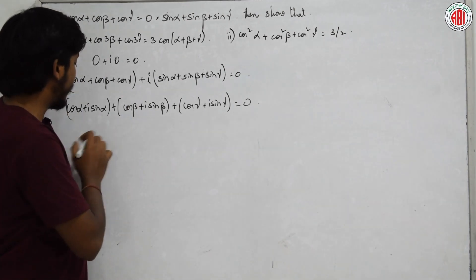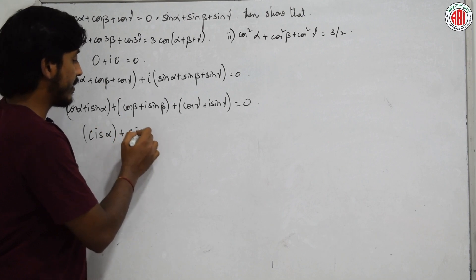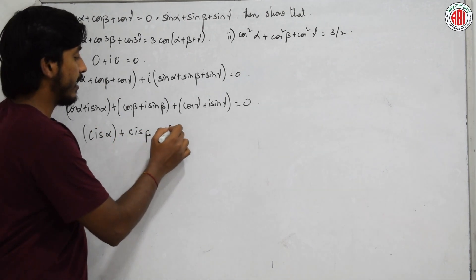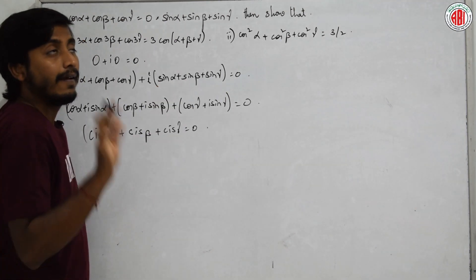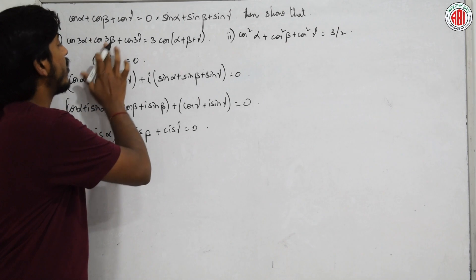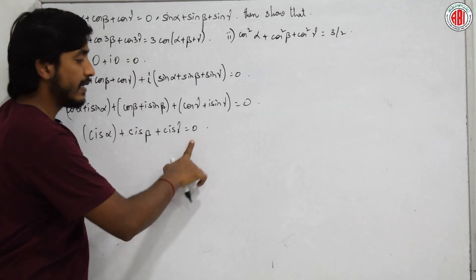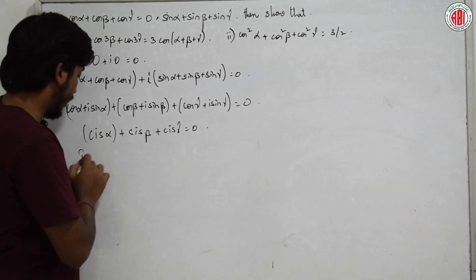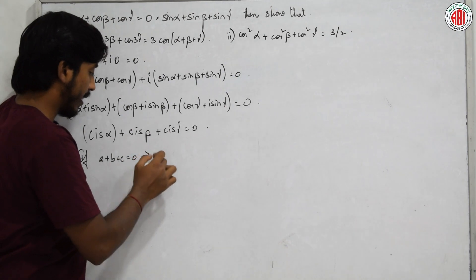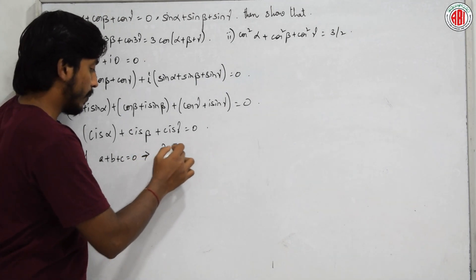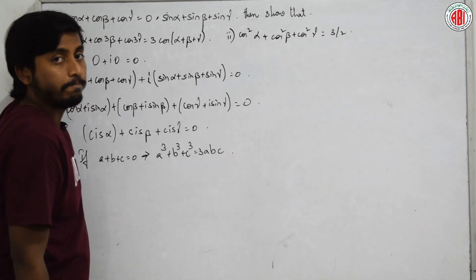Since we need cos 3α, cos 3β, cos 3γ, we use the algebraic identity: if a + b + c = 0, then a³ + b³ + c³ = 3abc. Applying this with a = cis α, b = cis β, c = cis γ.